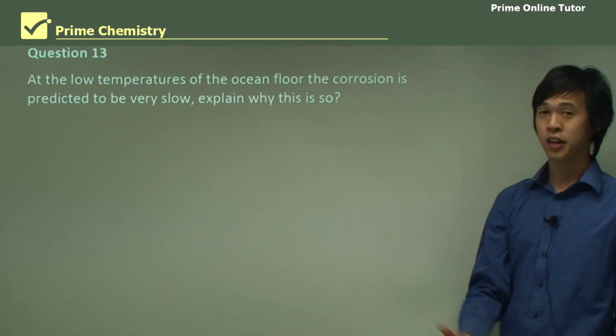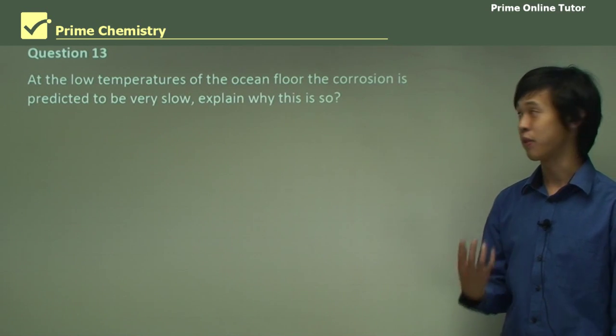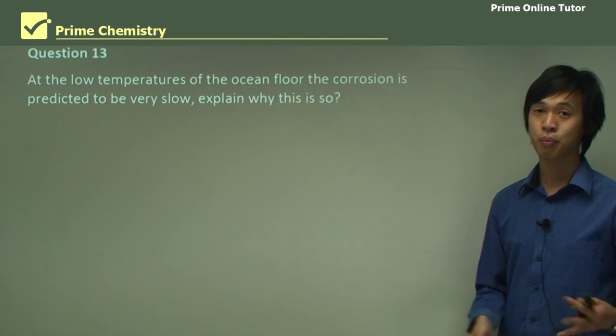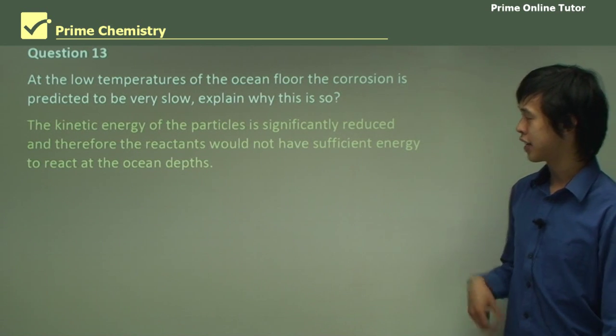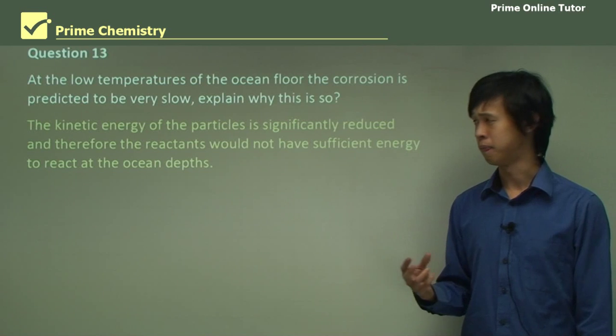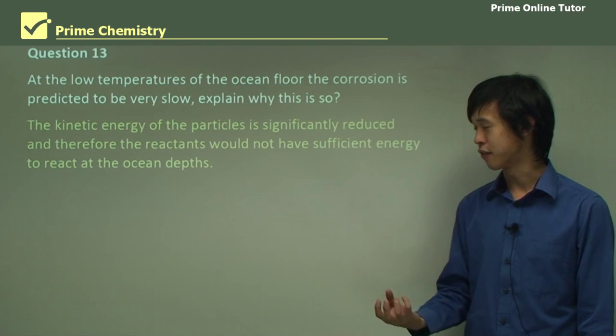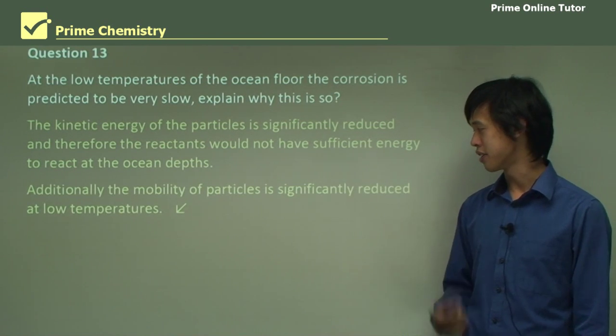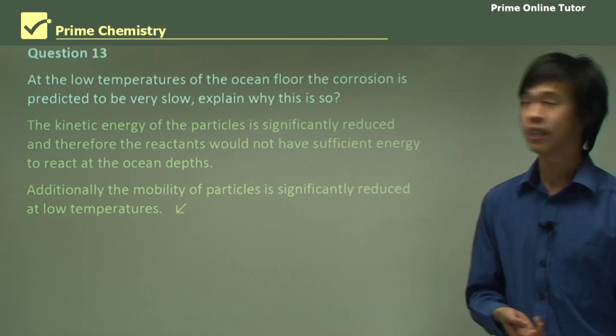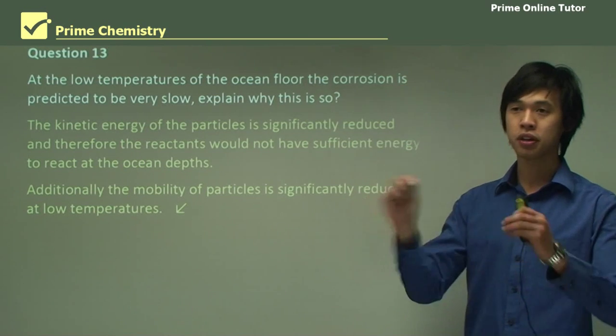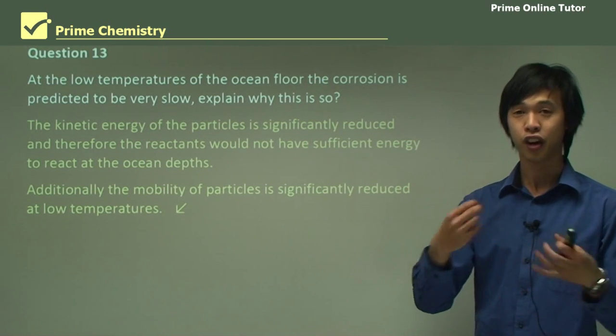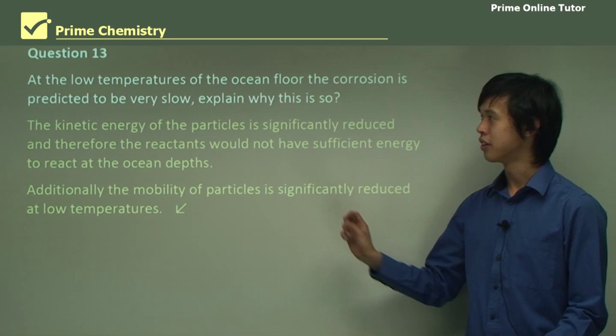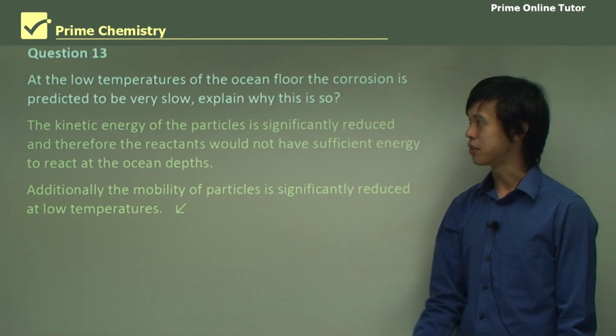So at the low temperatures of the ocean floor, the corrosion is predicted to be very slow. Explain why we predict this. Again, we've talked about this a lot, but we're going to keep trying to force this issue because it's an important thing to know. So the kinetic energy of the particles is really reduced when the temperature is very low. And therefore, the reactants would not have sufficient energy to react at the ocean depths. Additionally, the mobility of particles is also reduced at low temperatures, which will also hinder the reaction or the corrosion, because they're simply not mobile as if they were in a very hot substance. So the particle won't be able to move as much simply because it's cold. That's also related to the kinetic energy, and that will help to slow the corrosion.